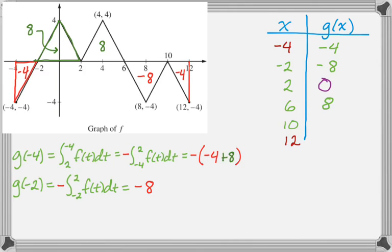And then from 6 to 10, it loses 8, so it's going to go back down to 0. And then if g of 10 is 0 and it loses 4 as it goes to 12, then g of 12 must be negative 4.